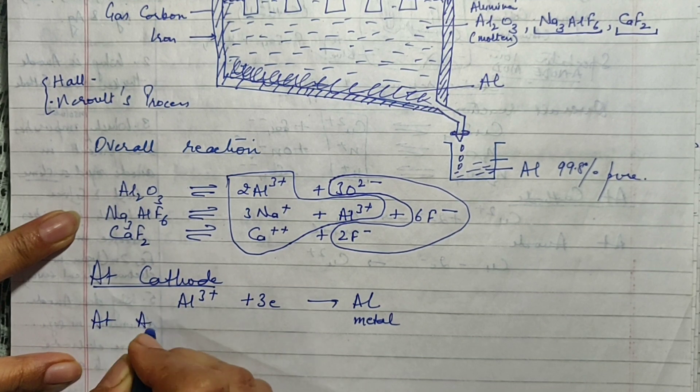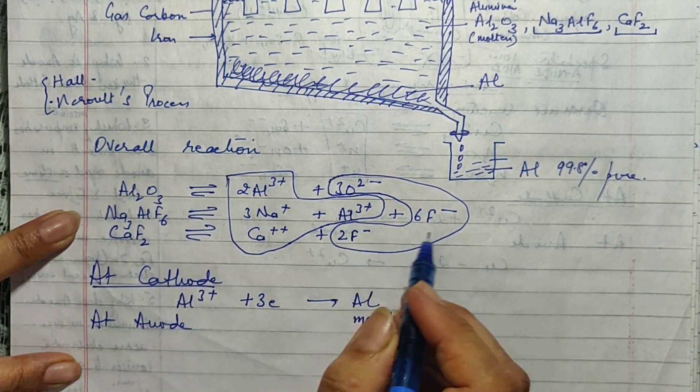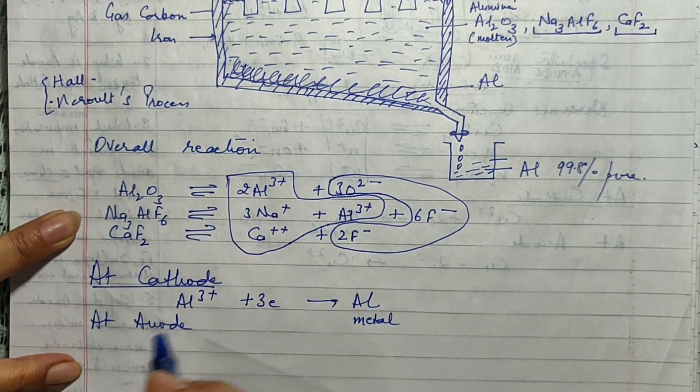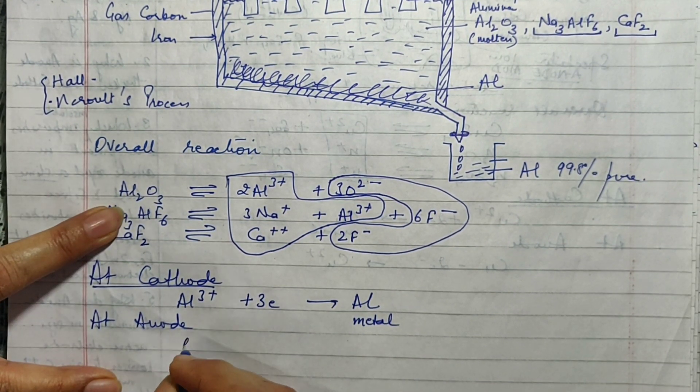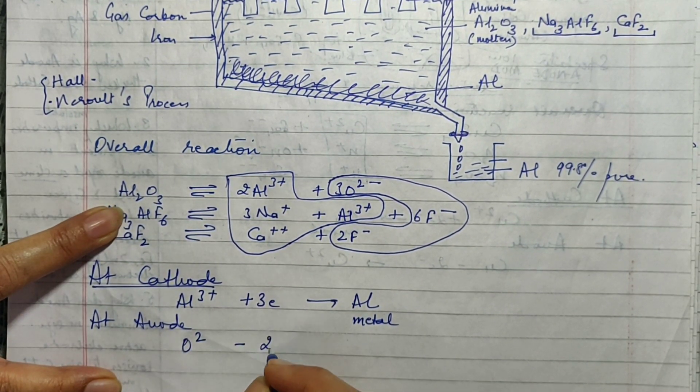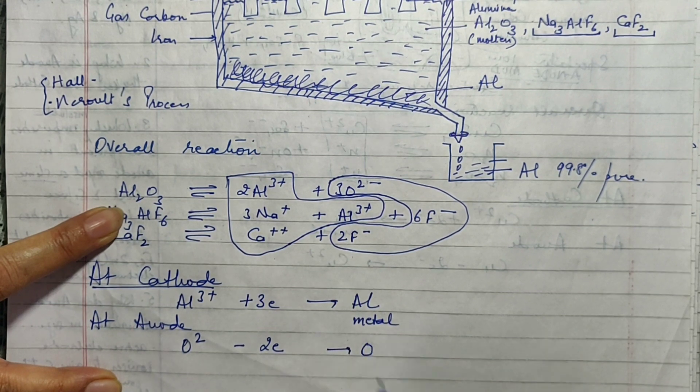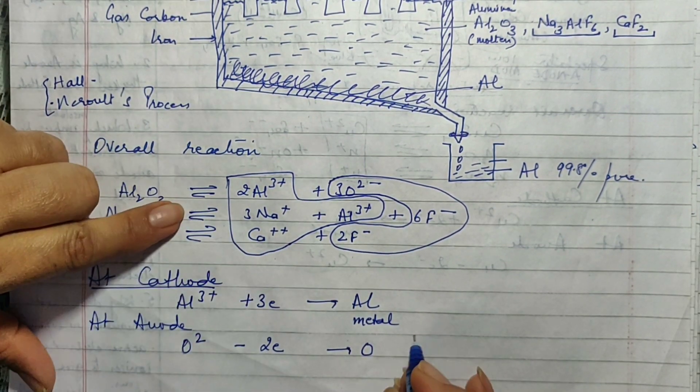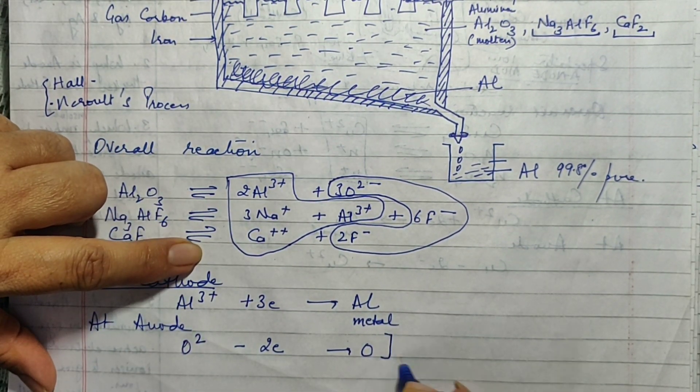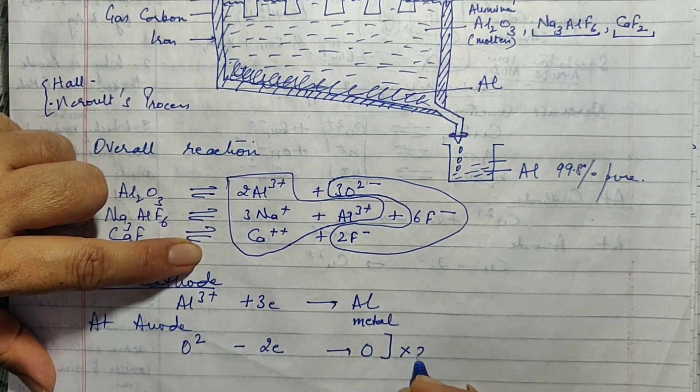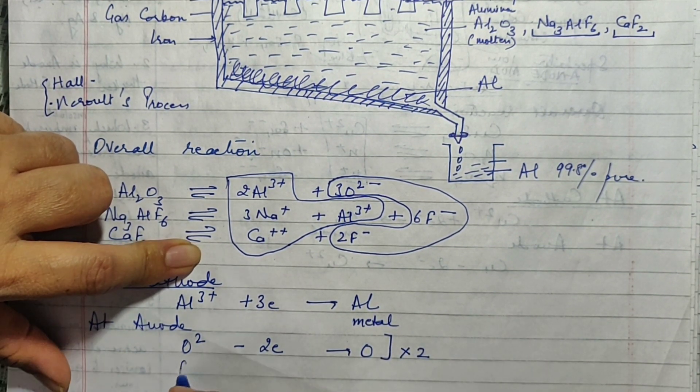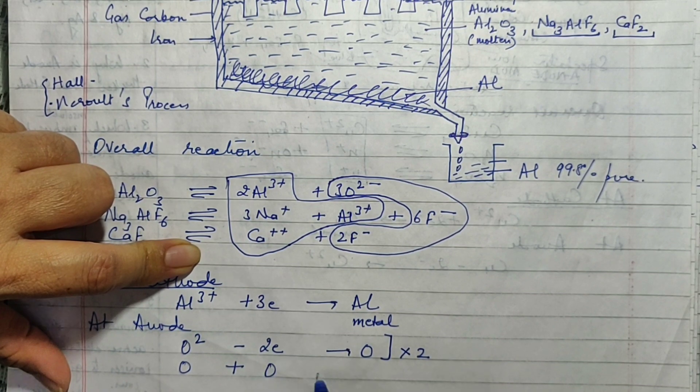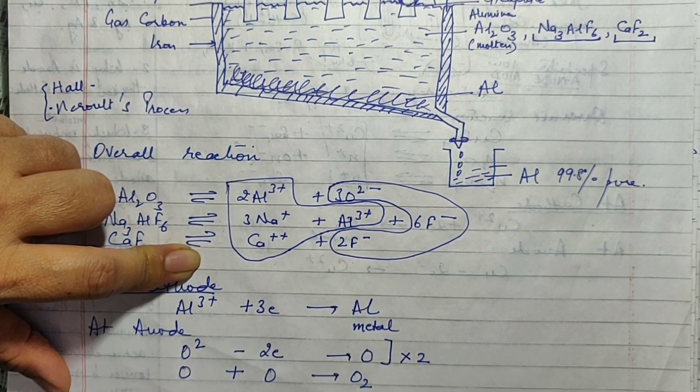Now what happens on the anode? At anode, again we have a choice between fluoride and oxygen. Out of these, oxygen happens to be down below in the reactivity series. So oxygen will lose two electrons and it will form oxygen atom. Now oxygen happens to be a non-metal. So it cannot exist in an atomic state. So two such reactions will take place. Two oxygen atoms will combine with each other and form a molecule of oxygen.